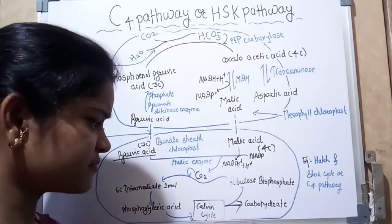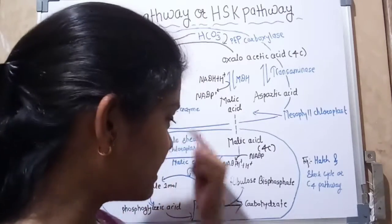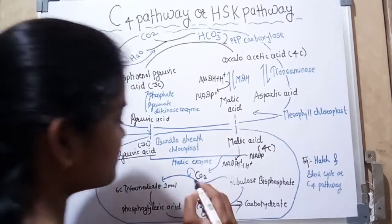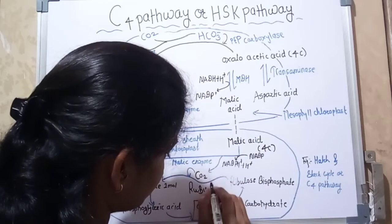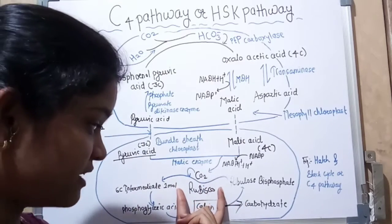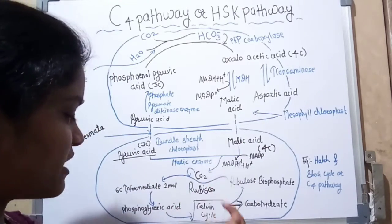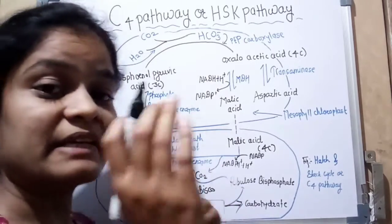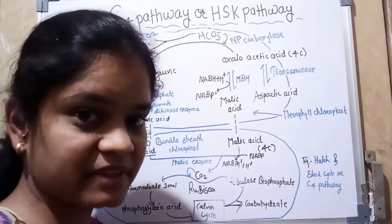The released CO2 and the energy carrier NADPH enter the Calvin cycle for the formation of carbohydrates. Inside the bundle sheath cells, there is the important enzyme RuBisCO (ribulose bisphosphate carboxylase), which fixes CO2. The CO2 concentration around RuBisCO increases, so the normal Calvin cycle runs instead of the C2 cycle.